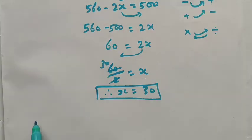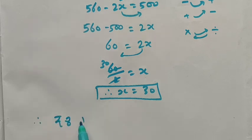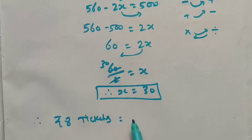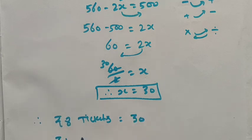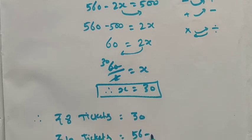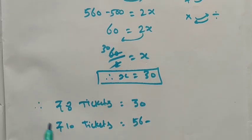Therefore, the number of rupees 8 ticket passengers is x, which equals 30. The number of rupees 10 ticket passengers is 56 minus x, which is 56 minus 30, equal to 26.